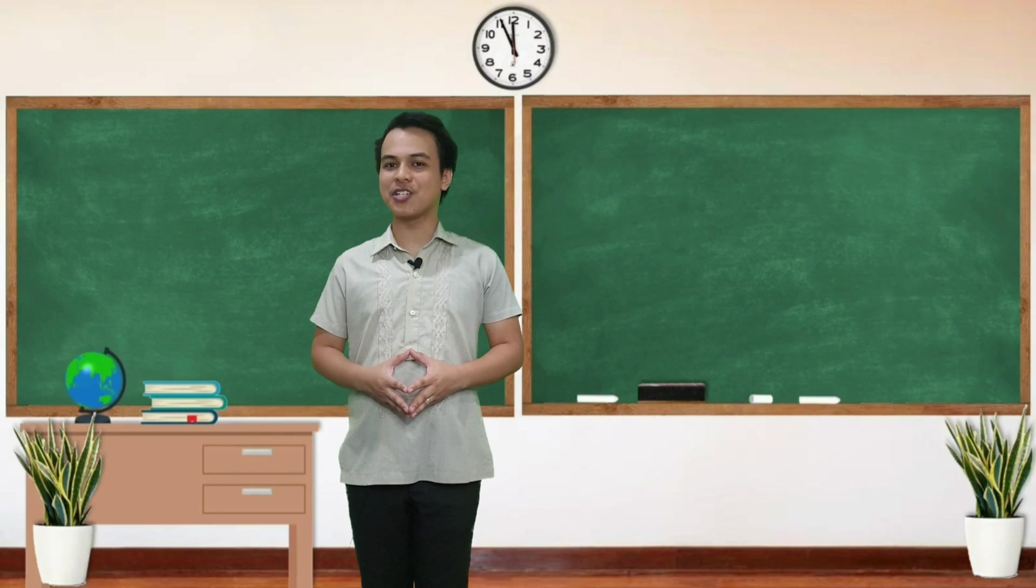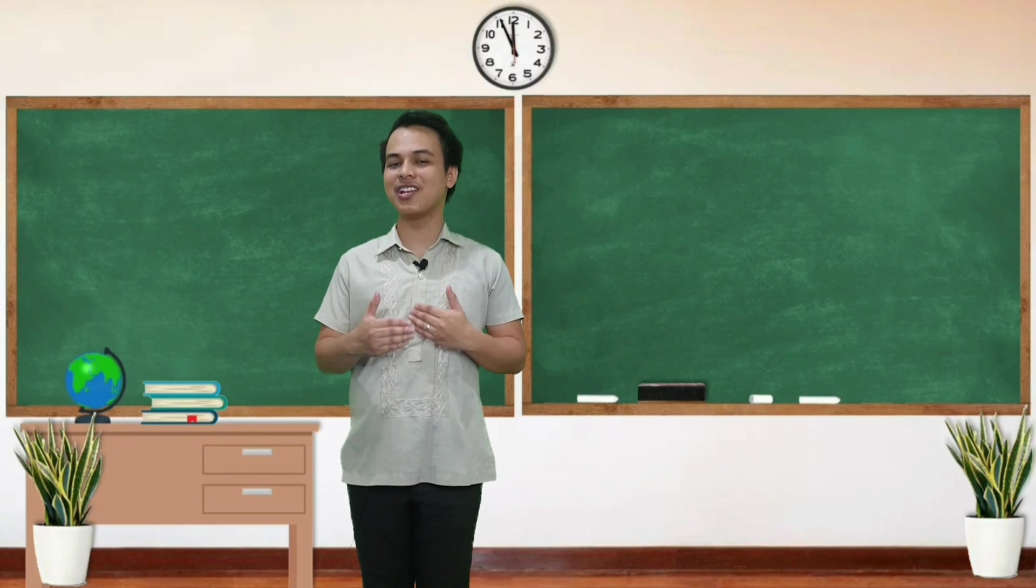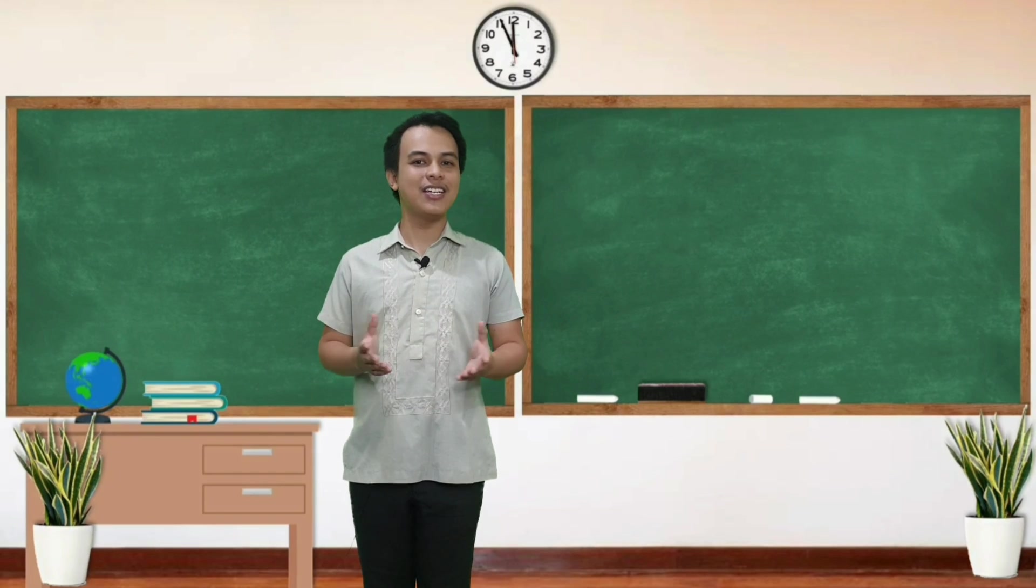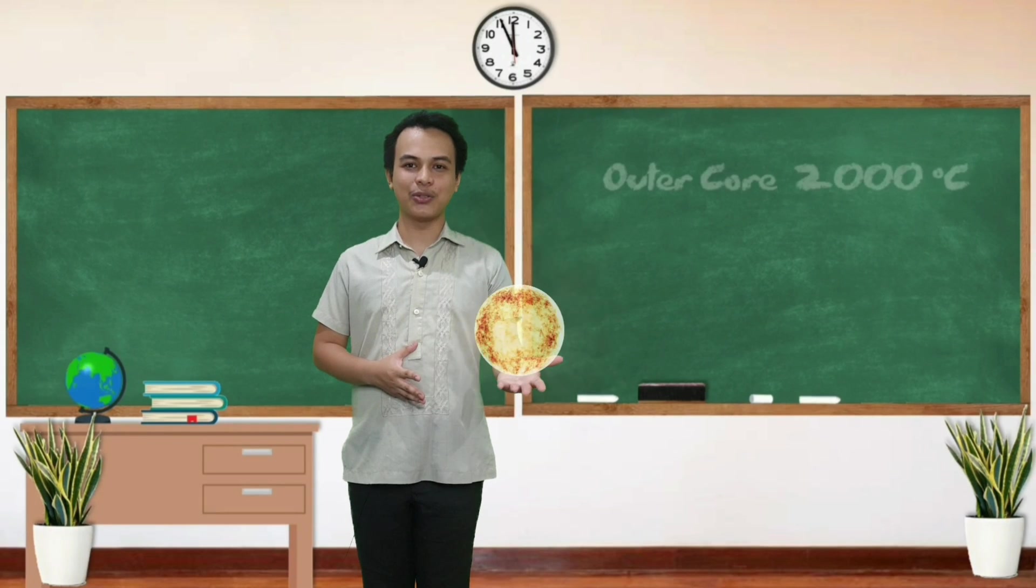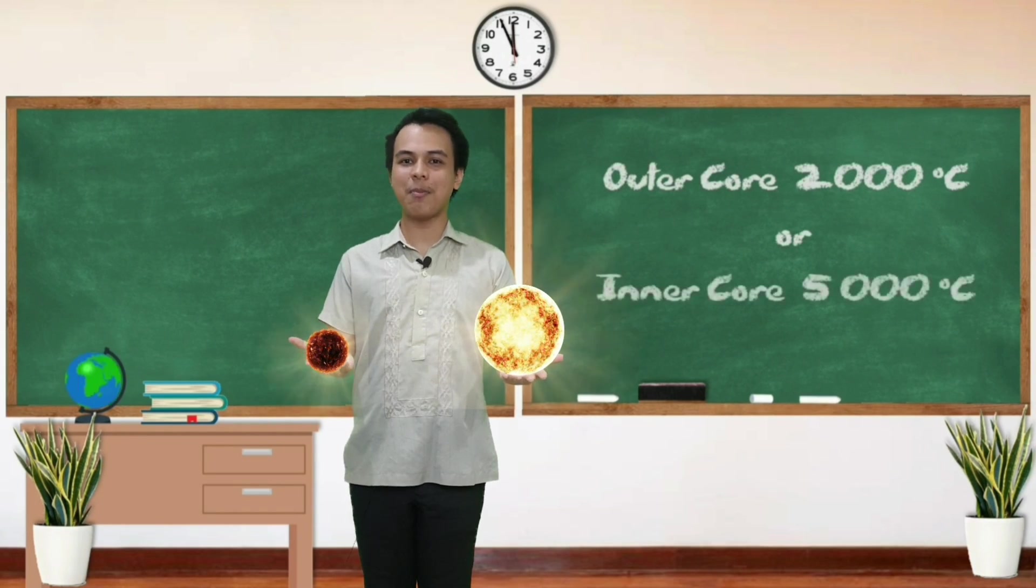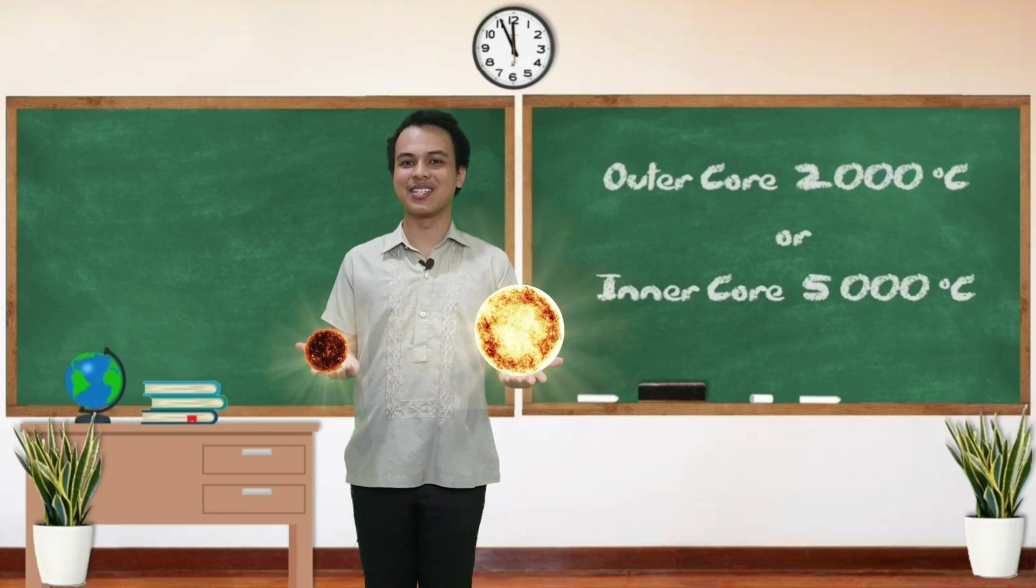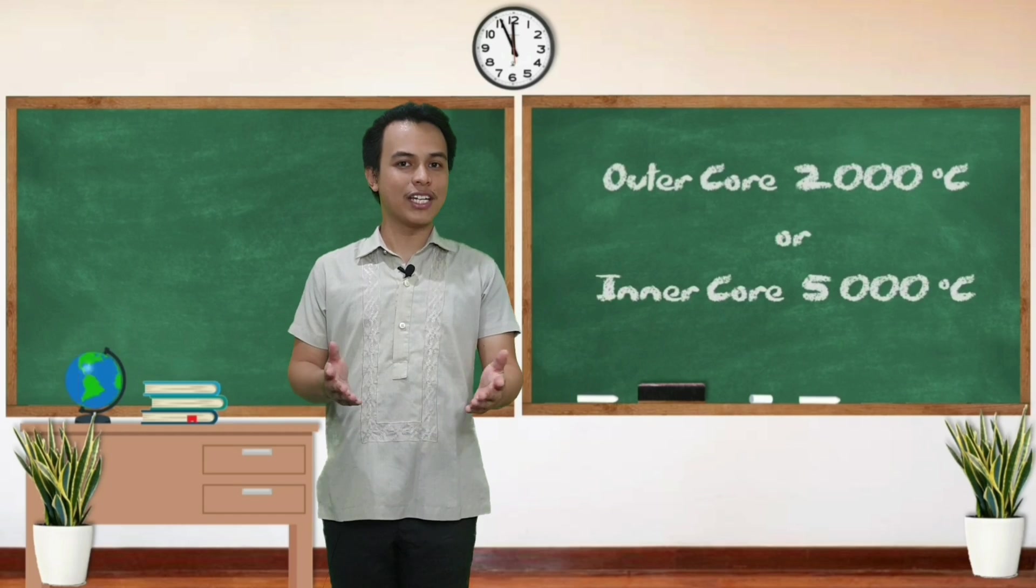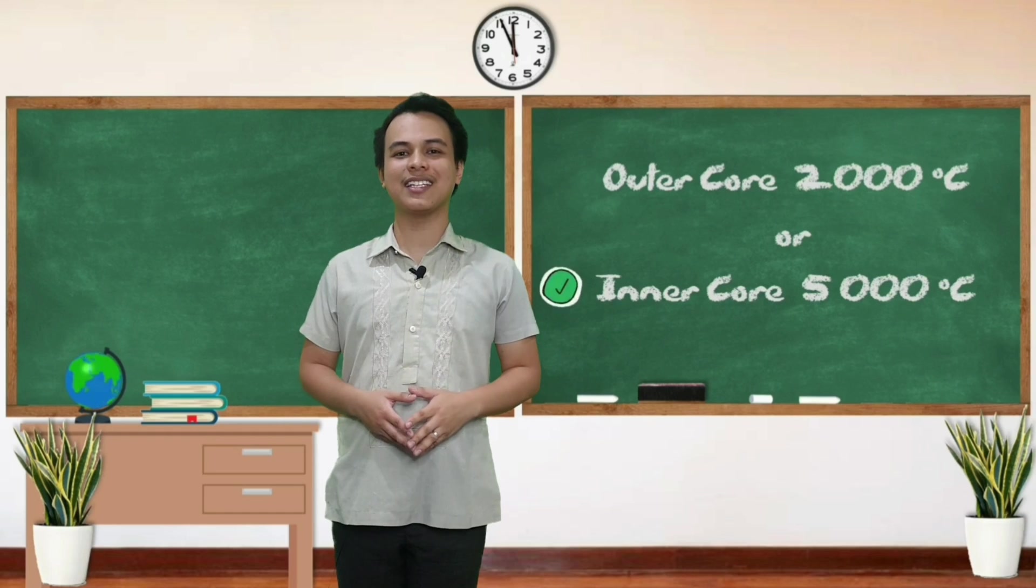Kung pagbabasihan ang mga approximate temperatures ng mga innermost layers ng ating daigdig, sino kaya ang mas mainit? Ang outer core na may 2,000 degrees Celsius o ang inner core na may 5,000 degrees Celsius? Kung sa tingin mo na mas mainit ang inner core, you are right.